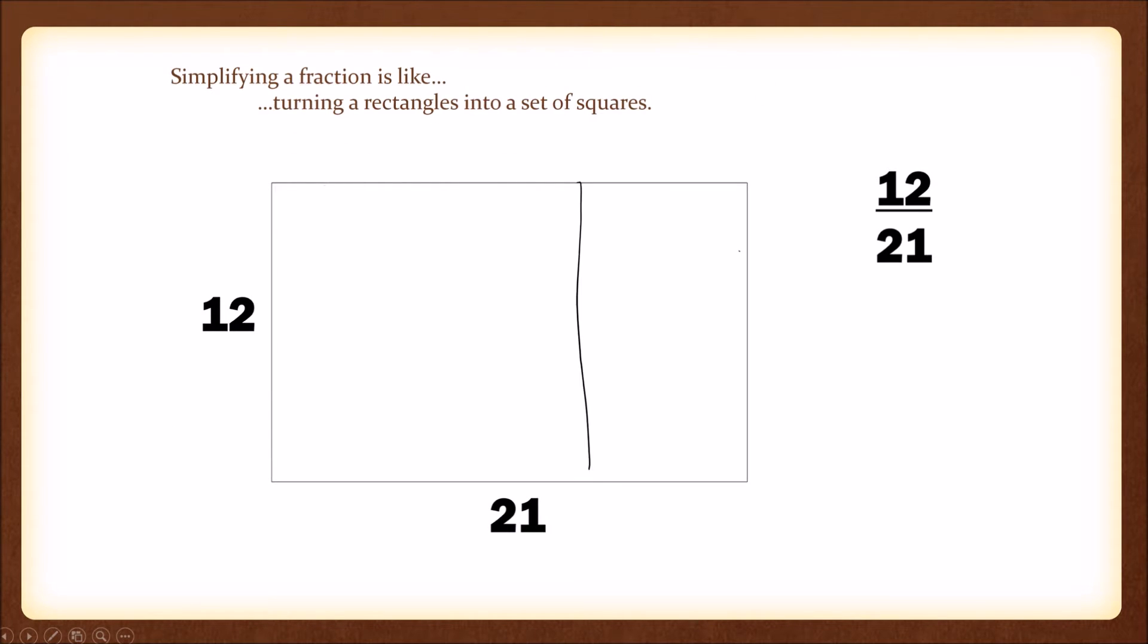What if we look at a rectangle that we have to break into a set of squares? Let's take a rectangle that is 12 tall and 21 across and find the largest square possible within that rectangle. A 12 by 12 square. We remove that and look what's left.